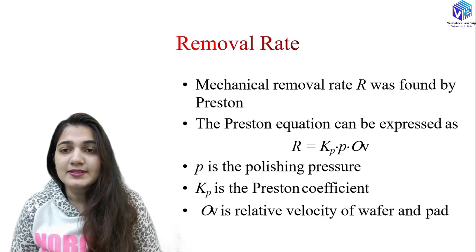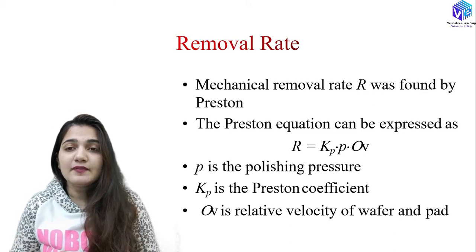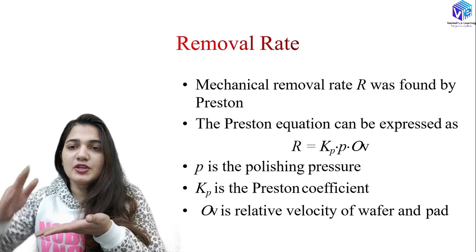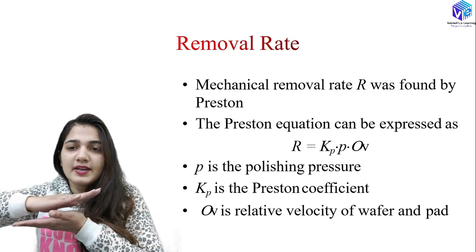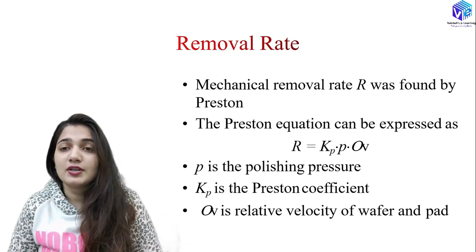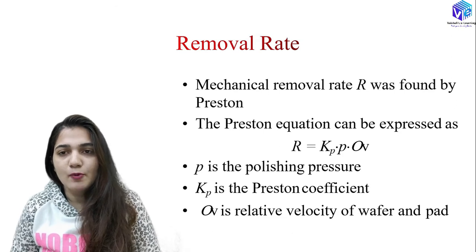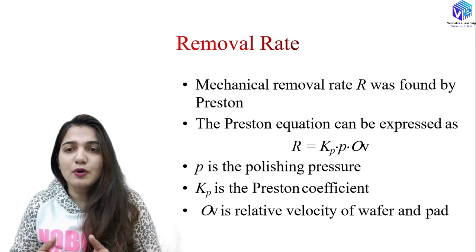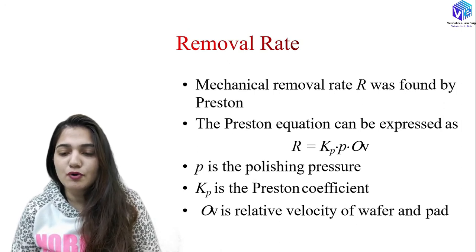According to the Preston equation, the removal rate R equals Kp × P × V, where V is the relative velocity of the wafer with respect to the polishing pad. Either both the pad and wafer are moving in a circular direction, or one moves linearly and the other circularly — so there is some relative velocity between them. P is the polishing pressure applied on the wafer holder, and Kp is the Preston coefficient.